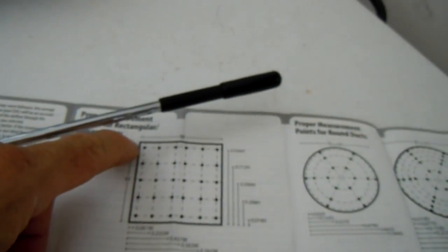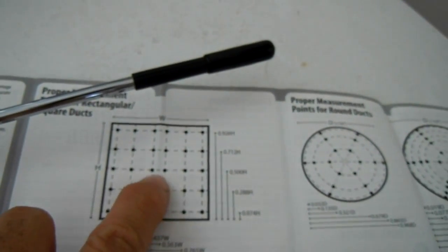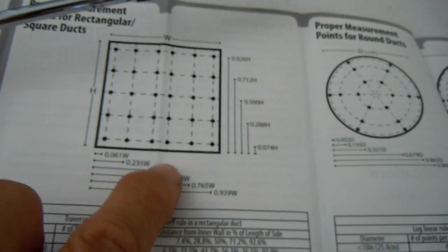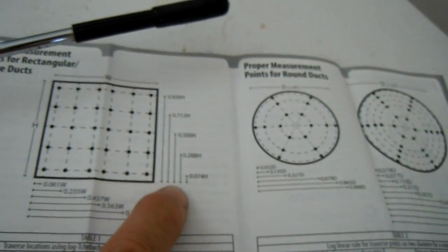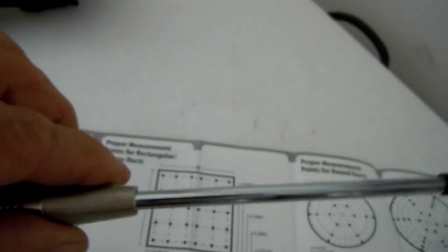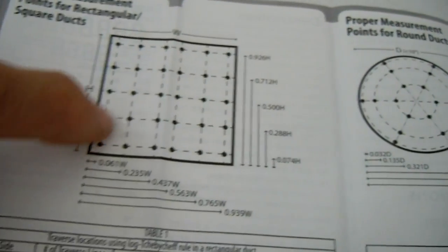Another factor that could easily throw off your readings is how deep your probe is into the duct. It really does matter big time. If you just kind of play around with inserting this into your duct, you'll get all kind of weird readings at different depths. It kind of gives you like a scale right here for square duct and another one here for round duct.